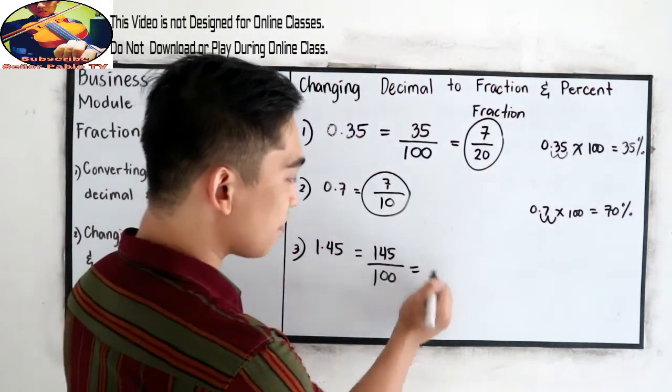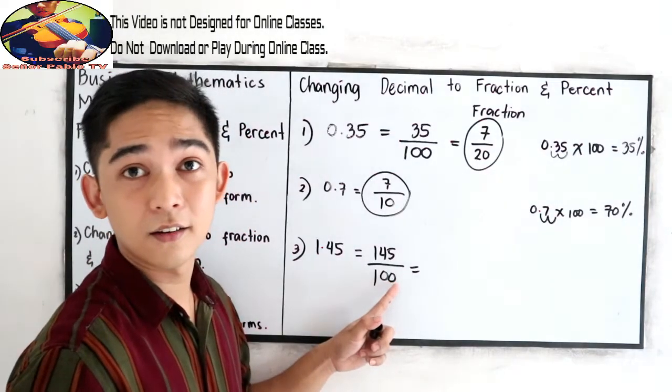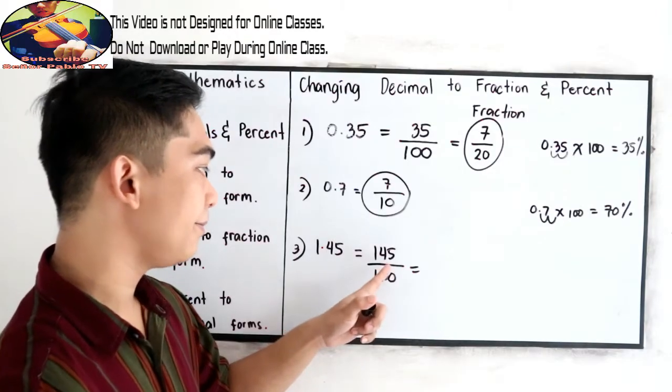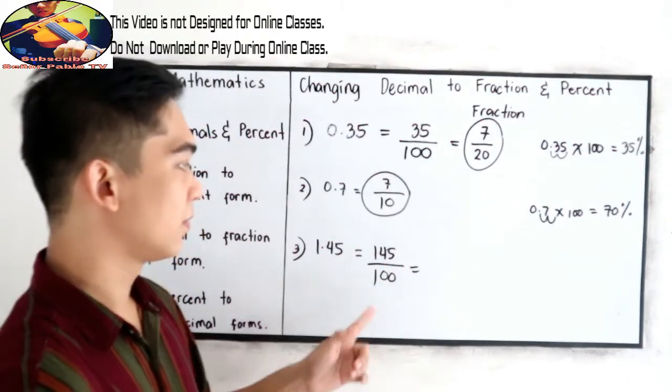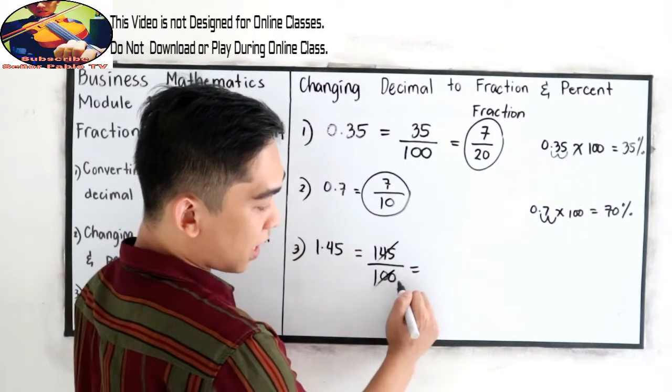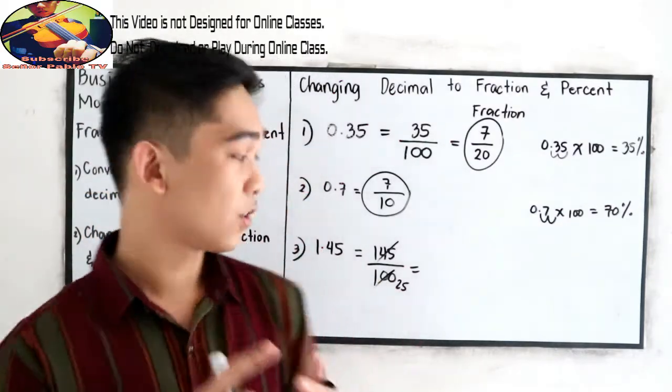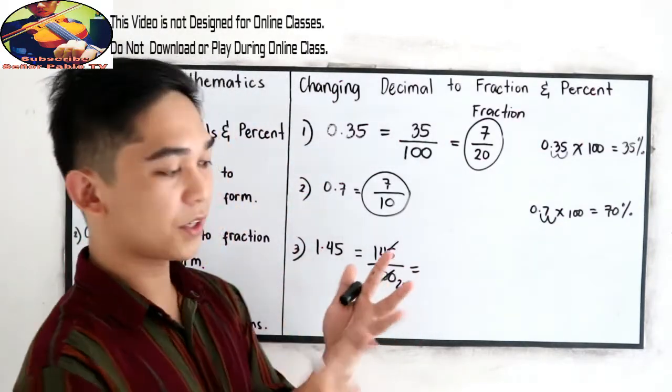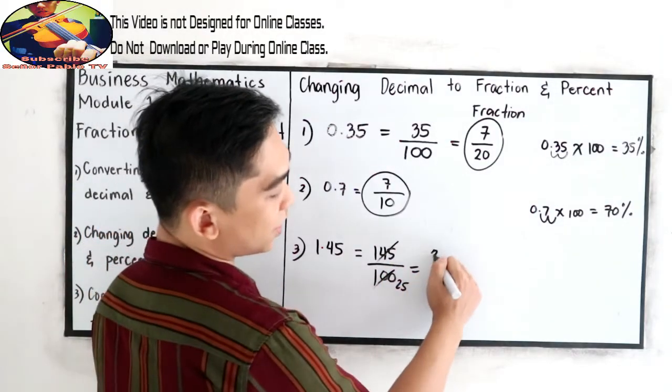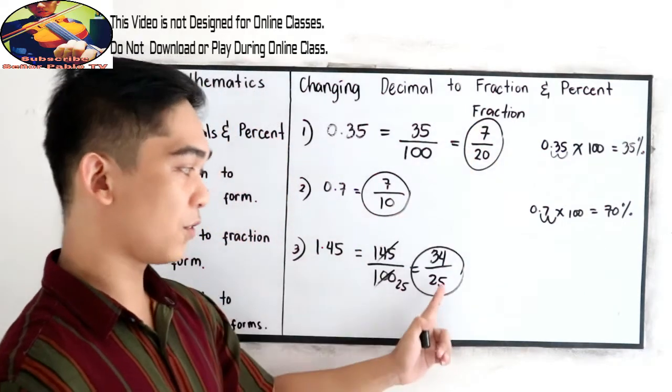Now reducing to lowest term, divisible by 5. So divisible by 5, this will become 25. 5, 10, 18, 20, 25, so 25. 5, 35, 40, 45, 25 plus 9, 34. So 34 over 25, that will be the fraction form.